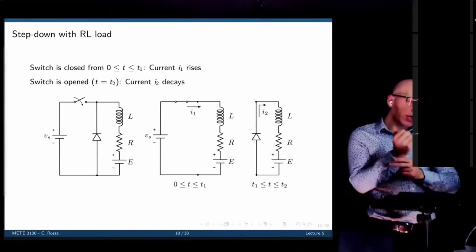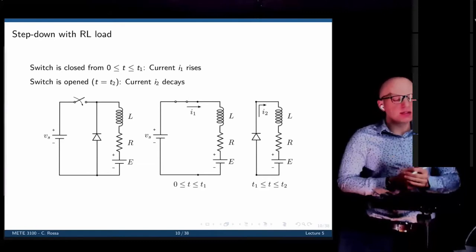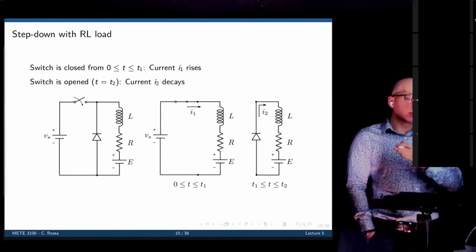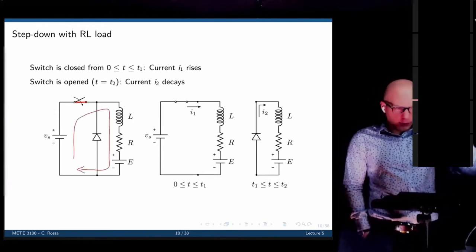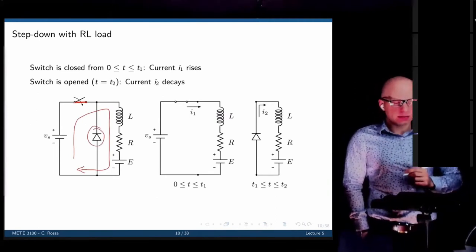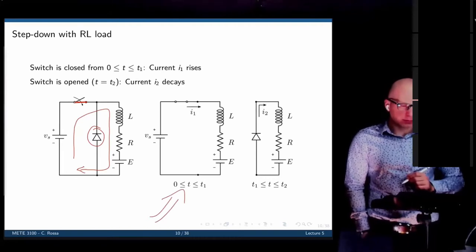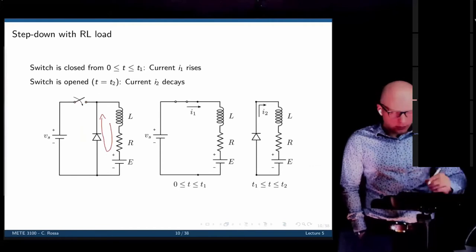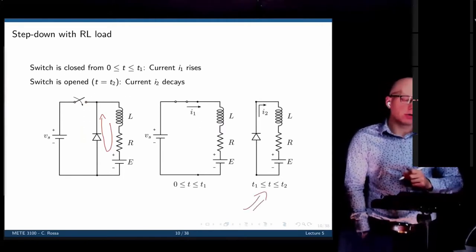Now let's consider a more complex scenario with an inductive load, a resistive load, and a voltage source — representing a DC motor. We have the same operating modes. From 0 to T1, the switch is closed and current flows through the inductor; the diode is reverse biased. When we open the switch, the current that was loaded in the inductor reverses polarity and flows through the diode. For the second part of the period, this is the equivalent circuit.